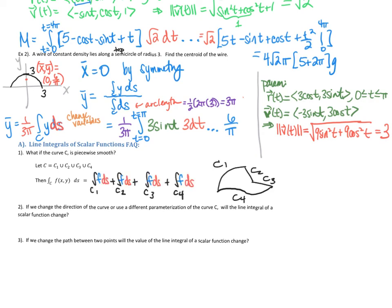And then next question, these next two questions actually I'd like you to try the next example. Make a guess first as to whether or not you think if we change the direction of the curve or use a different parametrization, do you think the line integral will change? And then if we change the path between the two points, do you think the line integral will change? And then we're going to try an example on the next page to test out our hypothesis, and we'll come back and revisit these questions after that.